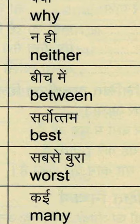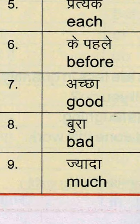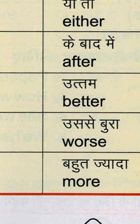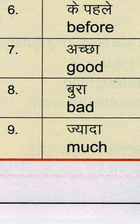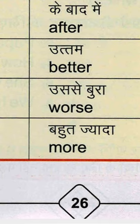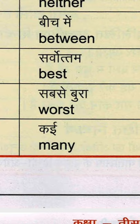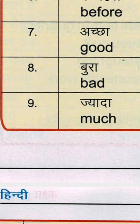देखो, सब एक दूसरे से लिंक हैं, जुड़े हुए हैं। अच्छा — good — G-O-O-D, good means अच्छा। उत्तम — better — B-E-T-T-E-R, better means उत्तम। सर्वोत्तम यानि सबसे अच्छा — best — B-E-S-T. फिर है बुरा — bad — B-A-D. थोड़ा और बुरा — worse — W-O-R-S-E. सबसे बुरा — worst — W-O-R-S-T.